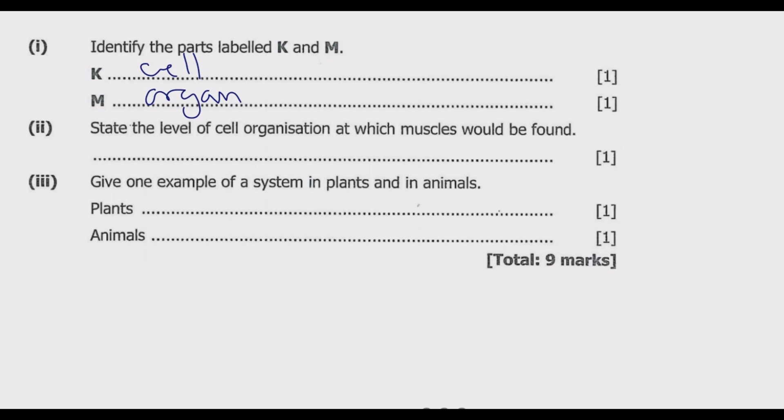Question B part ii: State the level of cell organization at which muscles would be found. The key word is muscle—where can we find the muscles? Muscles are found in tissues. The definition of a tissue is a group of cells that work together and have similar structure and function. The four types of tissues in a human body are the muscle, epithelial, connective, and nervous tissue. So the muscles are found in tissues.